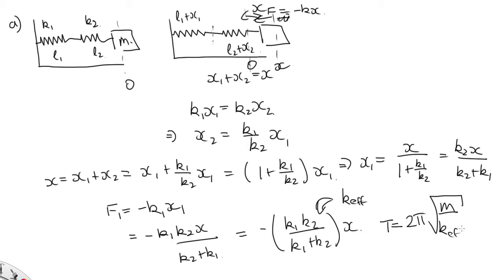In this case, it's the effective k. And so this is equal to 2 pi root m. Now, k effective is k1 plus k2 over k1 k2. And so that there is the period for this system.